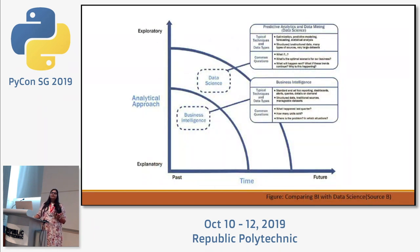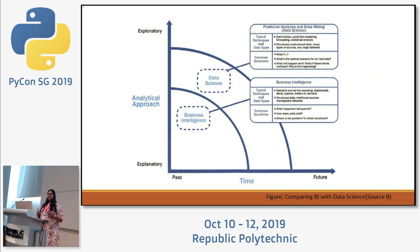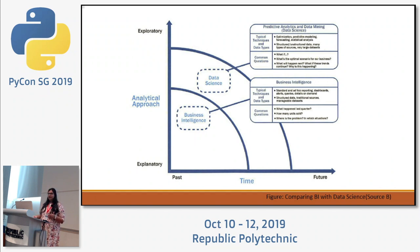Many times we tend to get confused between business intelligence and data science. When the approach of data analysis is more on the explanatory side, and the timeframe of data is mainly past data, that is business intelligence. Whereas data science comes into place when the approach is more exploratory, and we are working with present data as well as trying to predict future data. I hope this helps you distinguish between the two terms.